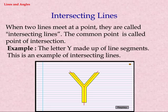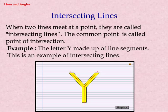Intersecting Lines. When two lines meet at a point, they are called Intersecting Lines. The common point is called the Point of Intersection. When two lines intersect, the vertically opposite angles so formed are equal. For example, the letter Y is made up of line segments and is an example of intersecting lines.